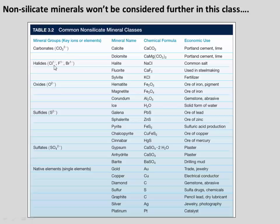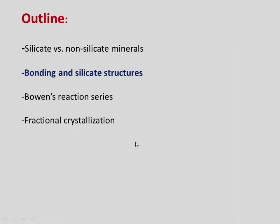Some famous examples you might know: we just mentioned the iron oxide hematite. Calcium carbonate is another mineral we'll see a lot in this class — that's the mineral calcite, the building block for limestone. Sodium chloride is common table salt. So a lot of these minerals are quite important. But now let's move into talking about bonding and the idea of silicate structures.